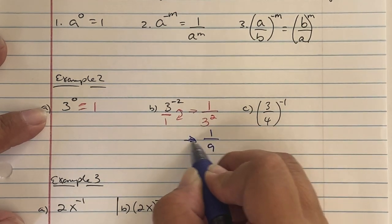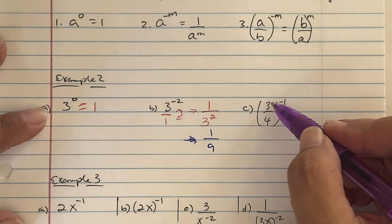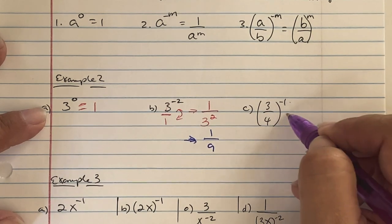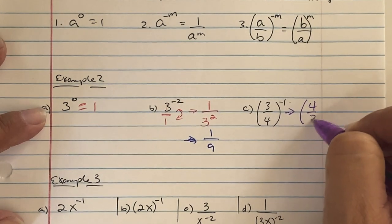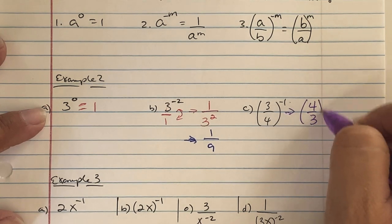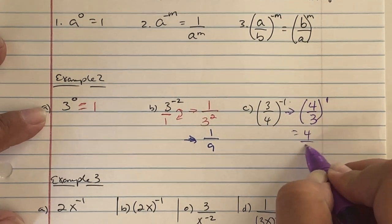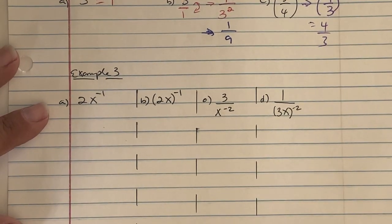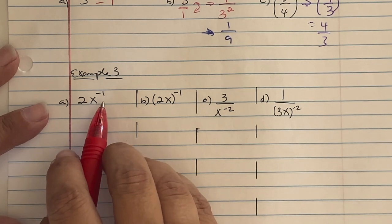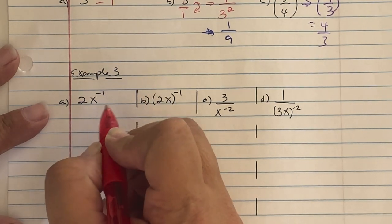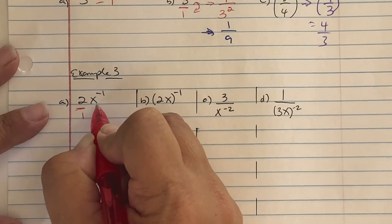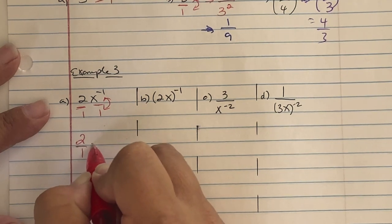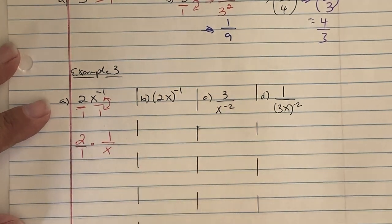The next one: 3 over 4 raised to the negative 1 power. Since it's in parentheses with a negative exponent, we invert the fraction to get 4 over 3, and the exponent becomes positive 1, so the answer is just 4 thirds. In Example 3a: 2 times x to the negative 1 — the negative 1 is only on the x, so we keep 2 over 1 and flip only the x, giving 2 over x.